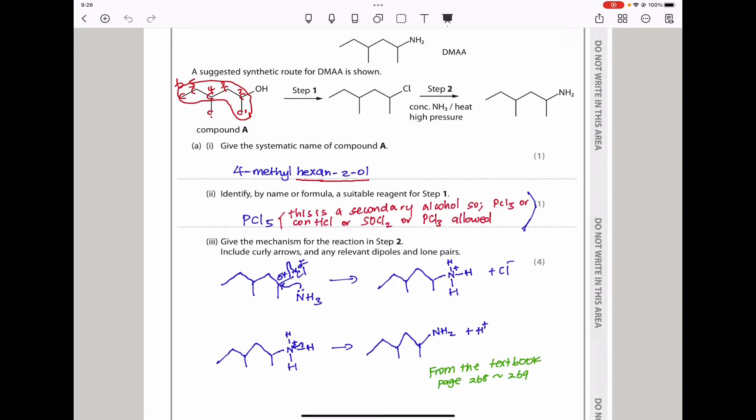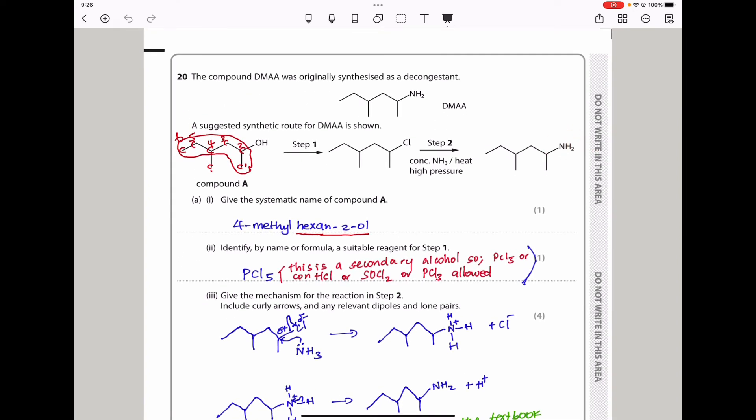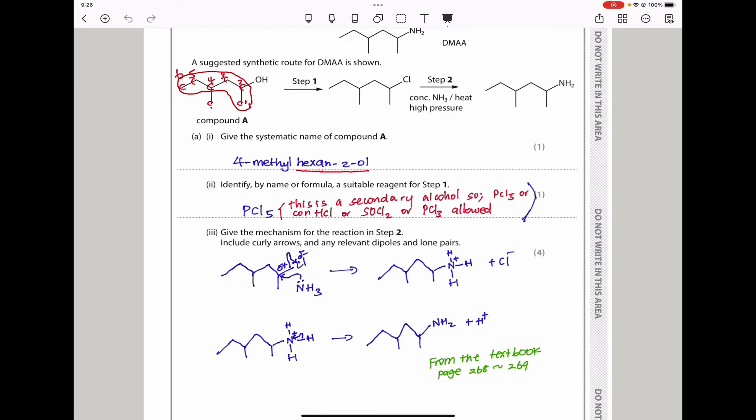Here we have give the mechanism for the reaction in step 2 and include curly arrows and any relevant dipoles. We begin by looking at the haloalkane. In step 2, an amine forms as a product, so I need to introduce ammonia. Because there is a lone pair on nitrogen, and this carbon is partially positive while this chlorine is partially negative, the lone pair is going to be donated to the partially positive carbon, and then that bond breaks away, taking the electrons to chlorine, making it chloride. We have this intermediate. This bond breaks as electrons are returned to nitrogen to form a lone pair, and that hydrogen goes away, forming the final product. This is in the textbook, page 268 to about 269.